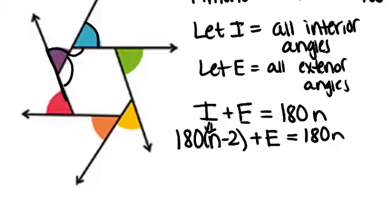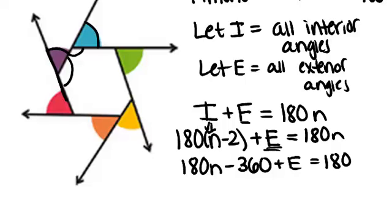Now I want to solve this equation for E in order to show you why the sum of the exterior angles, E, must equal 360. So if we keep simplifying, we get 180n minus 360 plus E equals 180n.